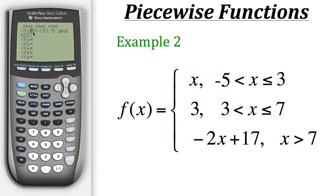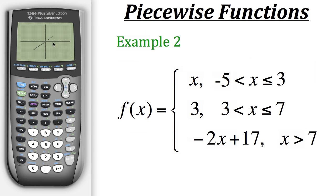So now we have the first part of the piecewise function as well as both parts of its condition. When we graph it, you can see it graphs f of x equals x between x equals negative 5 and x equals 3. You may notice that the calculator does not graph the open and closed circles on the endpoints of the piecewise function, so you'll have to keep that in mind. All the calculator will do is just draw those line segments.